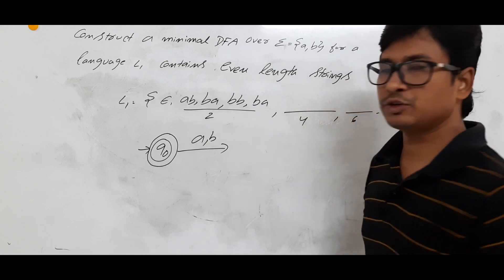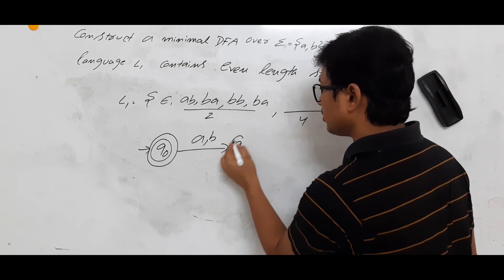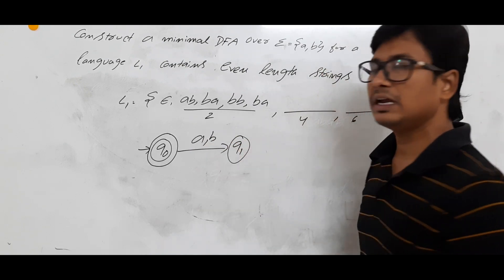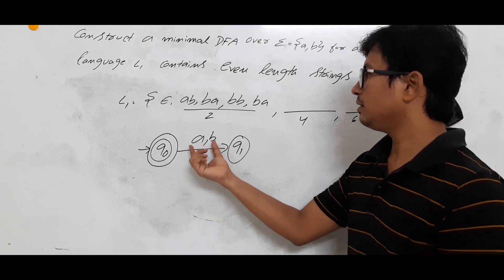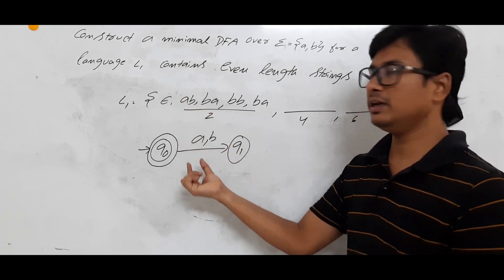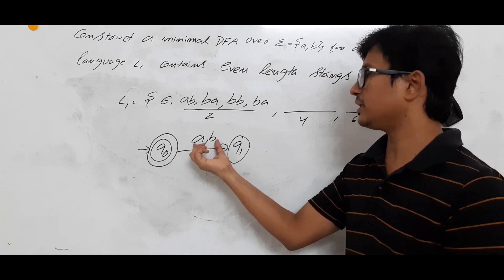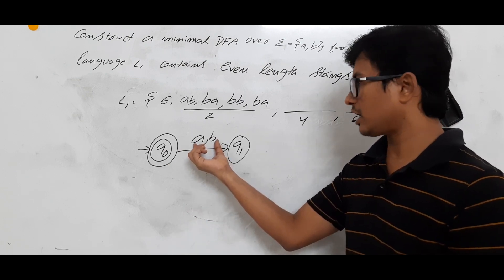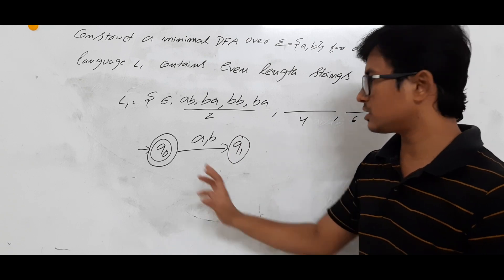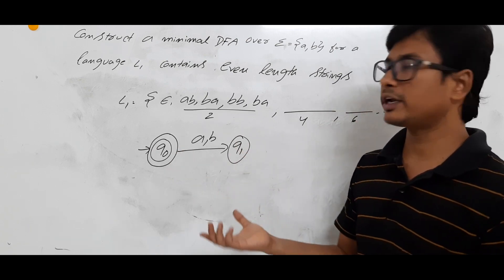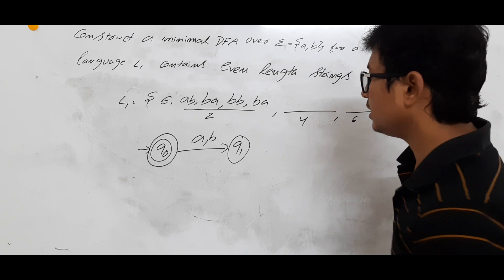Now, a single symbol A or B should not be accepted because it has length 1, which is odd. I write it as 'A comma B' because it can be either A or B. In both cases the length of the string is 1, so it should not be accepted.